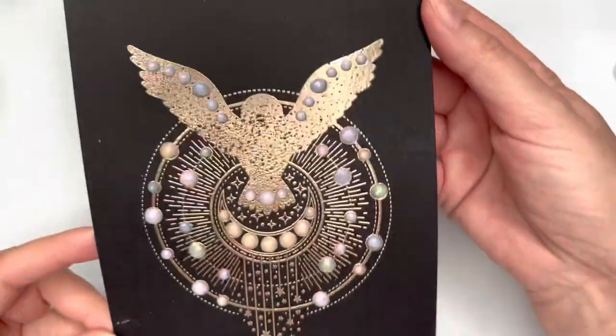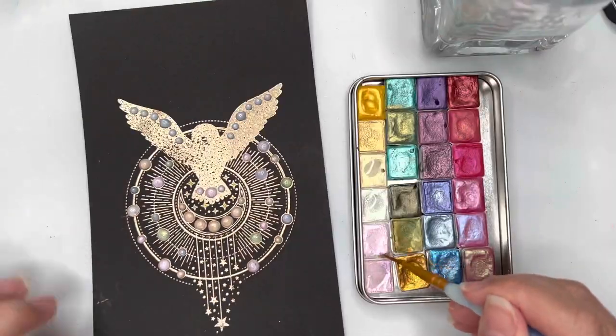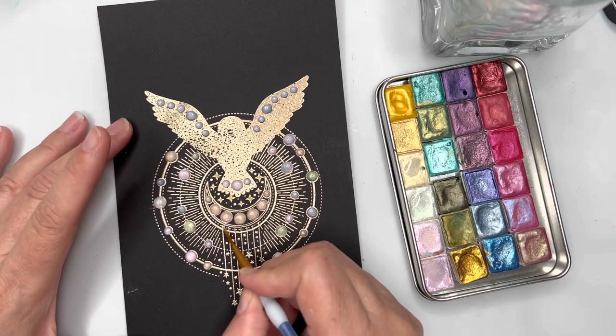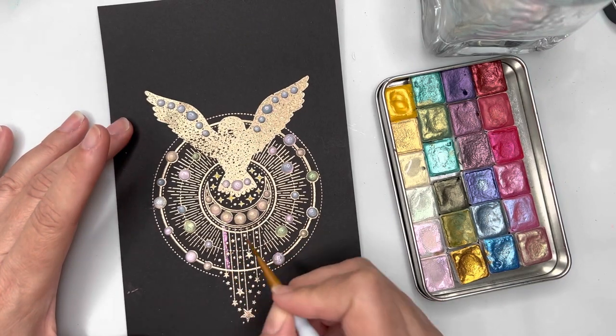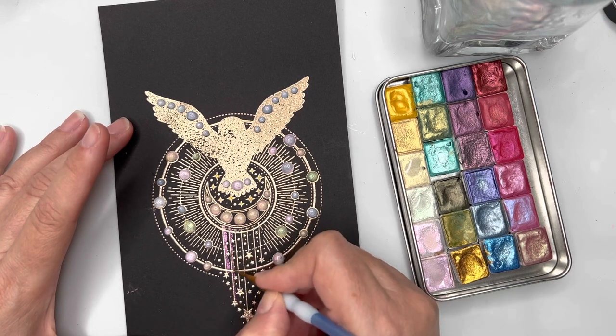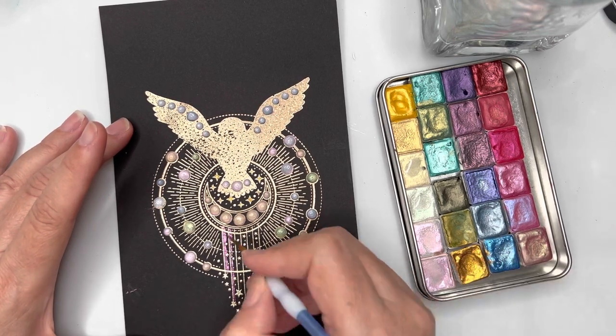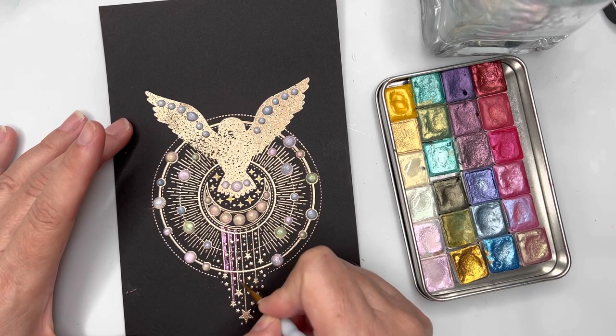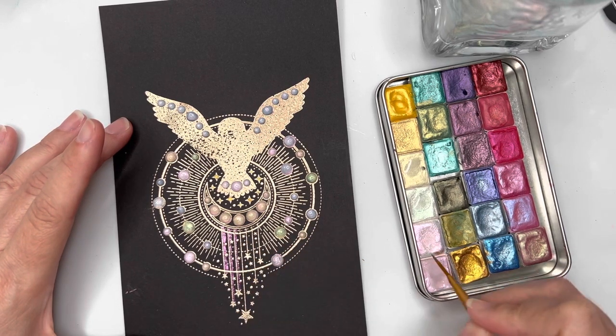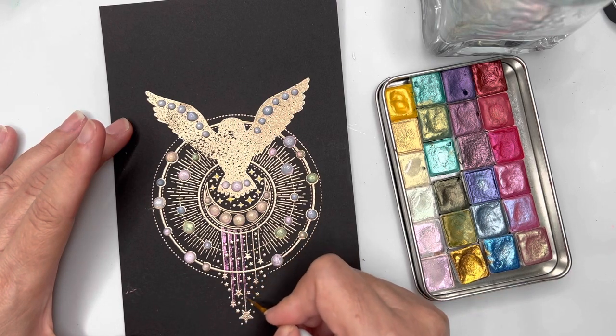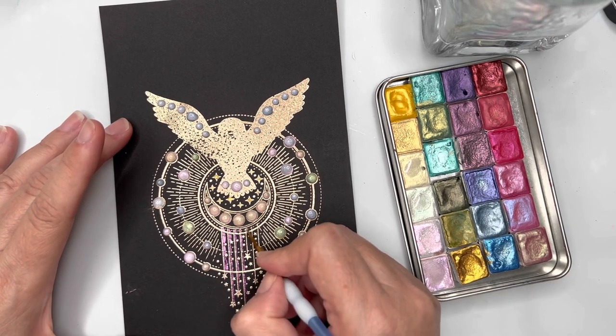So this one's all finished now. I just need to leave the Nuvo Drops to dry a little while, and while that's happening I'm bringing in some of my interference watercolors. They're the ones down the bottom row of my paint set there that look white but also have an iridescent property to them.